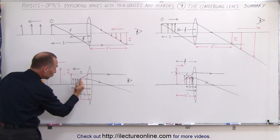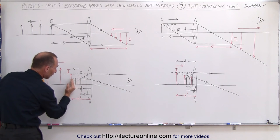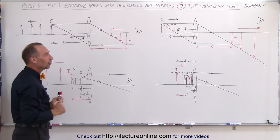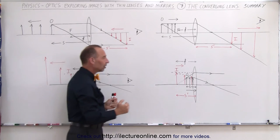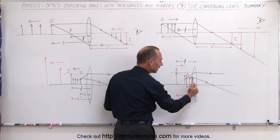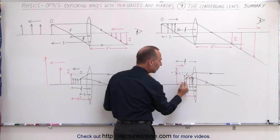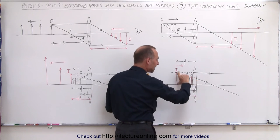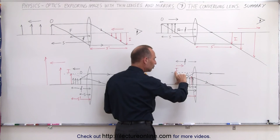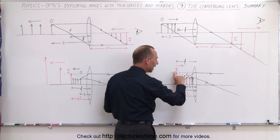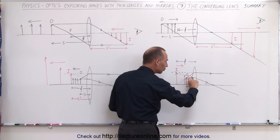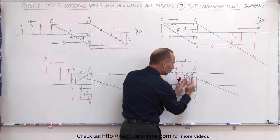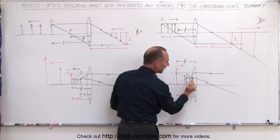In the limit, as the object reaches the focal point, the image would go to infinity and become infinitely large. Finally, we started at the halfway point between the lens and the focal point, and then began to move the object closer and closer to the lens. We began with an image that was at the focal point, and as we moved the object closer to the lens, the image would follow the object and become closer and closer to it.